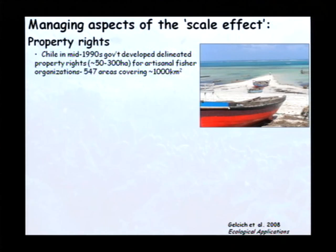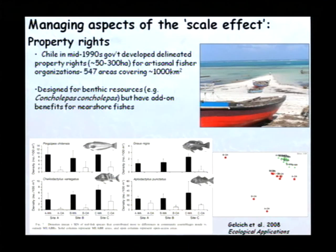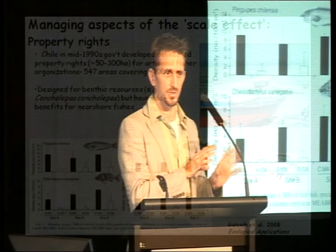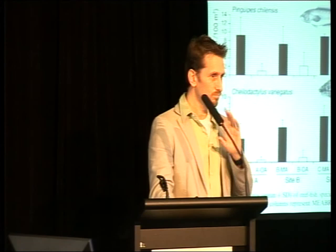In addressing the scale effect, property rights are going to be a critical element, as they help prevent the idea of roving bandits. Throughout the Pacific there are many property rights institutions, and we're also seeing these being developed in small-scale fisheries worldwide. One of the best examples comes from Chile, where in the mid-1990s the government developed delineated property rights for artisanal fisher organizations. There are now about 550 of these property rights systems covering about 1,000 square kilometers. These were designed primarily for benthic resources — in particular a small snail called loco — but they've had add-on benefits for near-shore fishes. Fish density for key fishery species is much higher in the property rights areas compared to open-access areas, and there are quite different assemblages in these property rights areas, even though they weren't designed for these species at all.